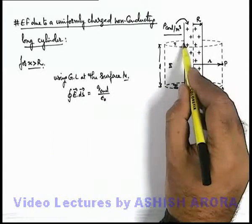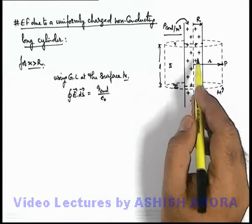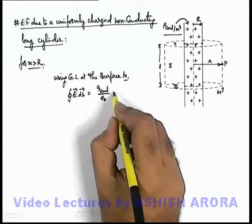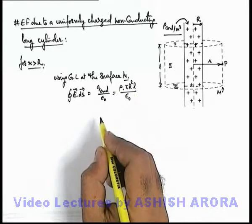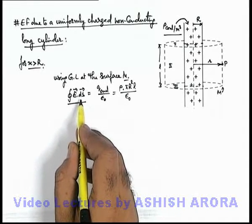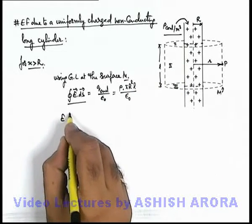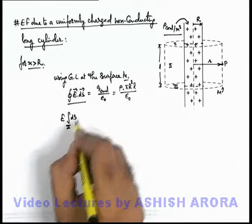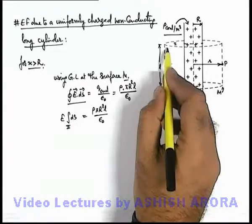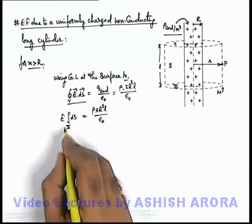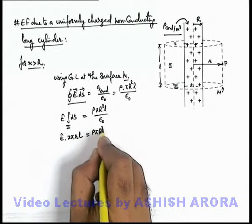The enclosed charge is given by the portion of the cylinder enclosed by the Gaussian surface, which has a volume of πr²l because it is of length l. So the enclosed charge can be written as ρ × πr²l / ε₀. The integral for parts 1 and 3 will vanish and only part 2 will remain, so we write E × ∫dS for section 2 equals ρπr²l / ε₀. The integral of the surface element dS gives the lateral surface area, which is 2πrl, so E × 2πrl = ρπr²l / ε₀.